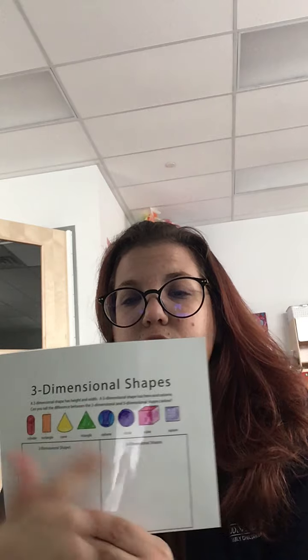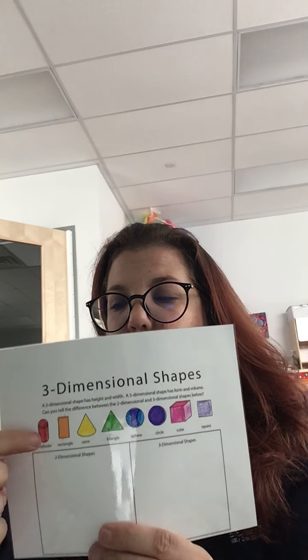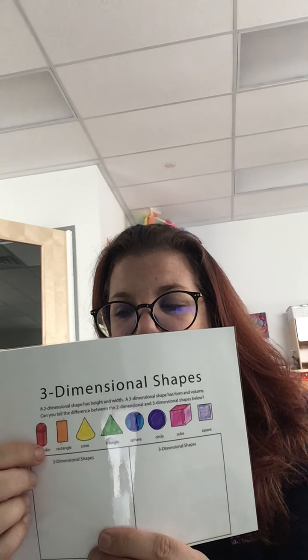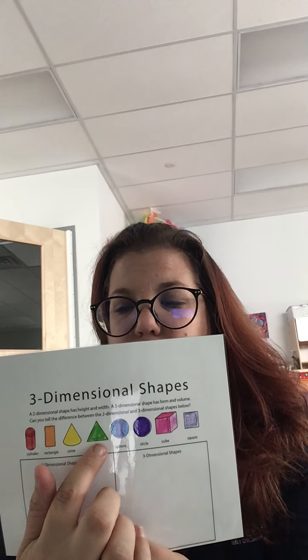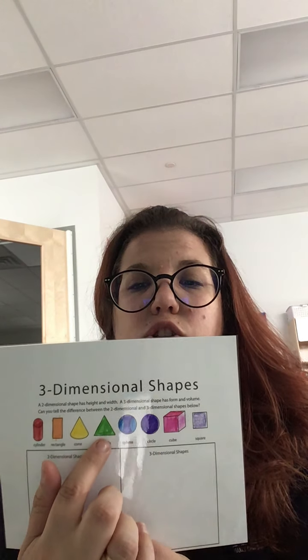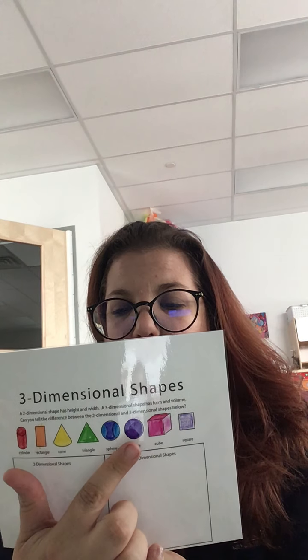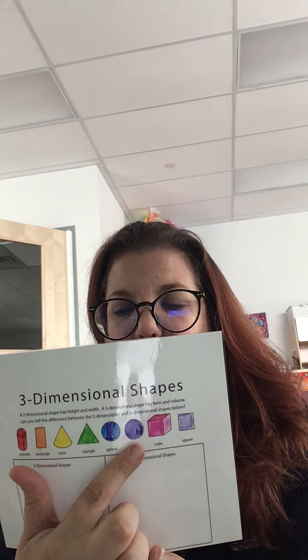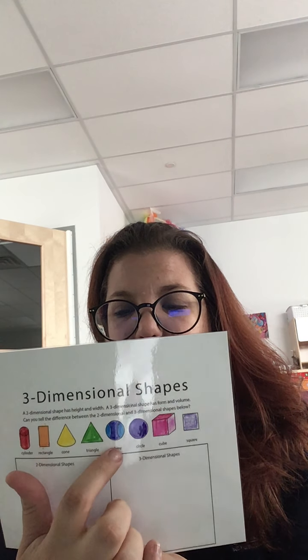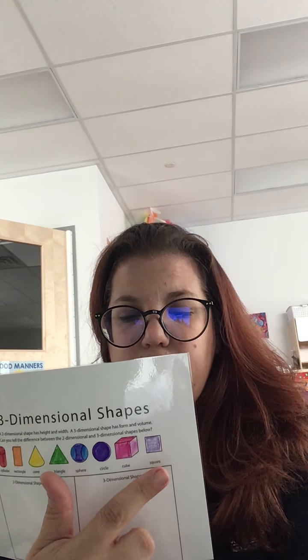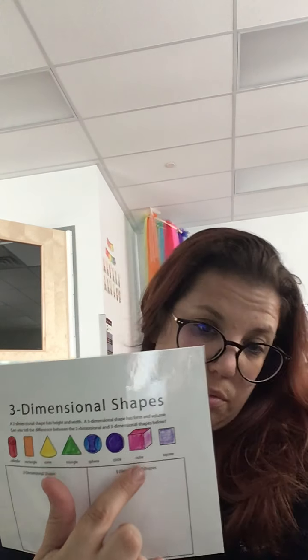We have a sorting activity. We have three-dimensional and two-dimensional. The three-dimensional version of a rectangle is a cylinder, a triangle is a cone, a circle is a sphere, and the three-dimensional version of a square is a cube.